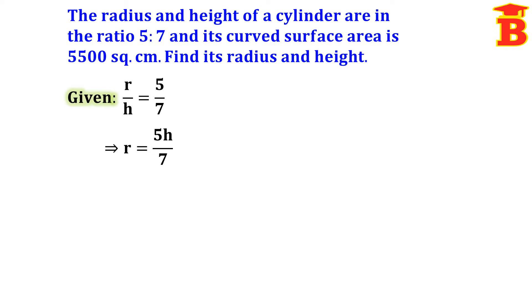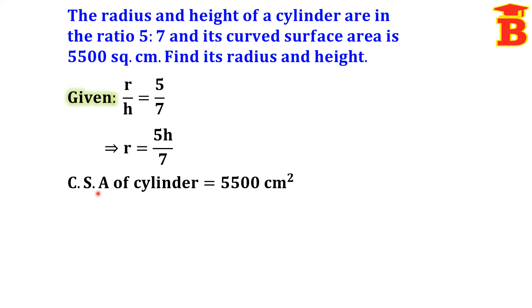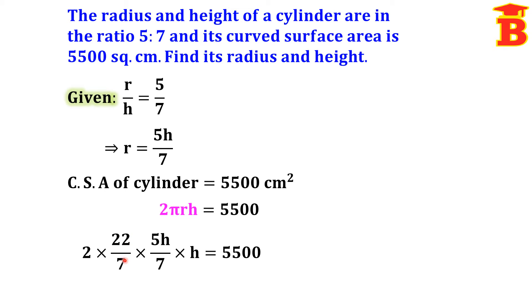It is given that the curved surface area is 5500 cm square. The CSA formula is 2 pi R H, so we substitute: 2 into (22 by 7) into (5H by 7) into H equal to 5500.